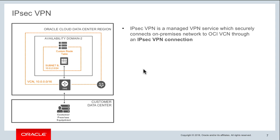Now let's talk about IPSec VPN on OCI. IPSec VPN is a managed VPN service that securely connects your on-premises data center to the Oracle Cloud Infrastructure virtual cloud network. IPSec itself is a protocol suite that encrypts the entire IP traffic before packets are transferred from source to destination, ensuring your remote connectivity is secure and encrypted.